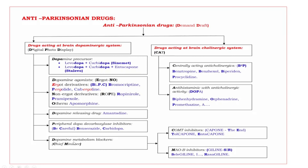The last subgroup is dopamine metabolism inhibitors. These are further subdivided using the mnemonic 'Chief Minister,' with bold letters C and M. C stands for COMT inhibitors — COMT means catechol-O-methyltransferase. COMT inhibitors end with the suffix '-capone.' The drugs use the mnemonic 'THE,' bold letters T and E. T: tolcapone. E: entacapone.